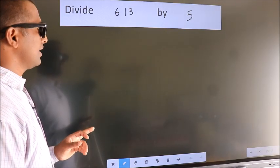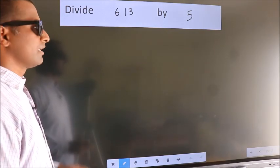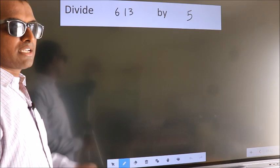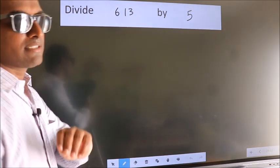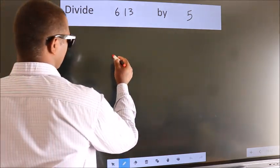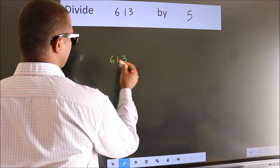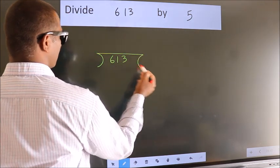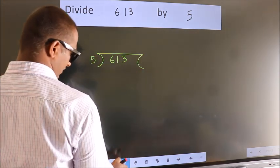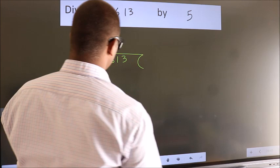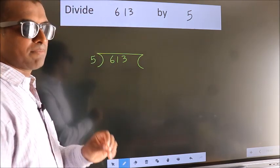Divide 613 by 5. To do this division, we should frame it in this way. 613 here, 5 here. This is your step 1.